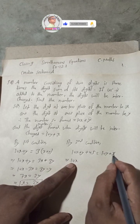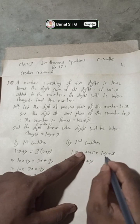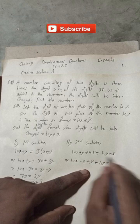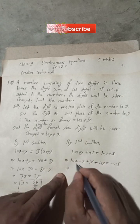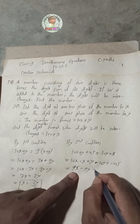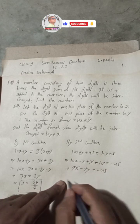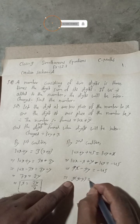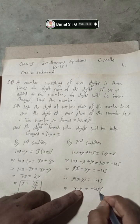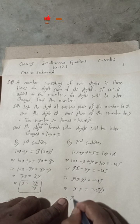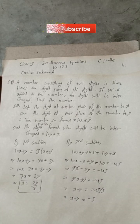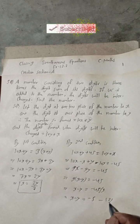Rearranging: 10x − x + y − 10y = −45, so 9x − 9y = −45. Dividing by 9: x − y = −5. This is Equation 2.